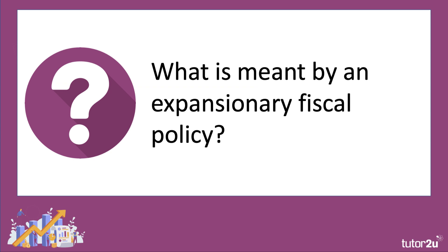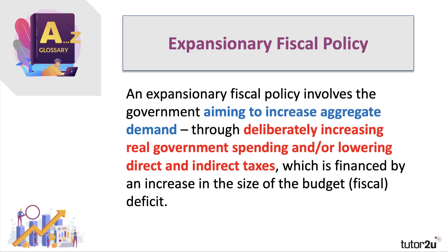First of all, what do we mean by this term? It's a policy that involves the government aiming to deliberately increase or stimulate aggregate demand. They can do that in a variety of ways — one would be to inject some extra government spending into the economy in real terms, on health, education, housing, or transport. Or they could decide to lower the burden of taxation by cutting direct and/or indirect taxes. So it's a deliberate fiscal stimulus, an expansionary fiscal policy, which is normally financed by an increase in the size of the fiscal or budget deficit — which is the gap between government spending and taxation.